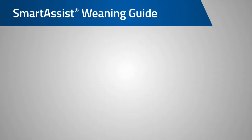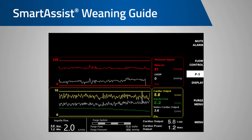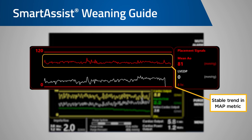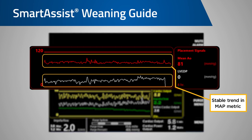As we start to turn down the Impella support, we observe the mean arterial pressure trend. You want to see that the trend of the MAP is stable as Impella support is reduced. Next, we will look at the LVEDP or LV load trend. Again, we want to see that this remains stable as support is reduced. Remember, these values are only available at P4 and higher.